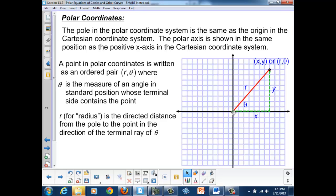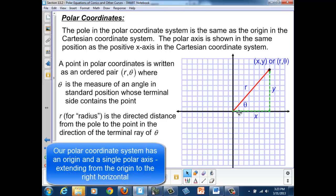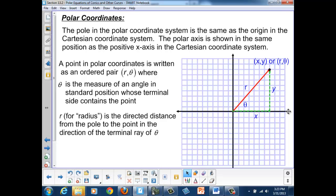But from there, we're going to use a polar axis, which is the same as our x-axis in the Cartesian system. To describe our location using polar coordinates, we're going to write an ordered pair just like we did with x, y.